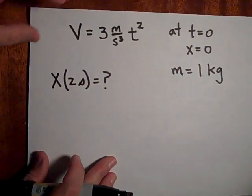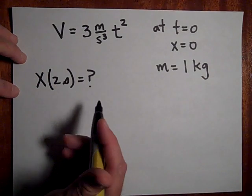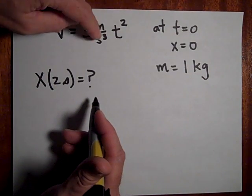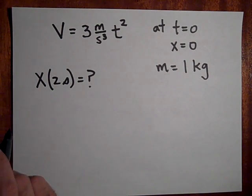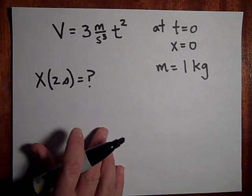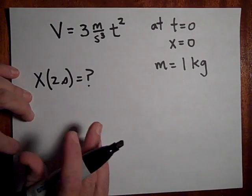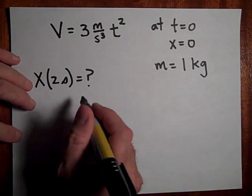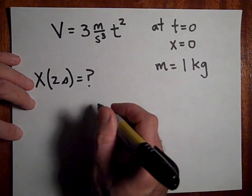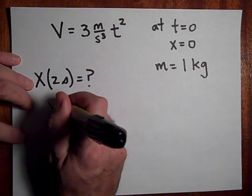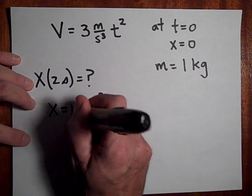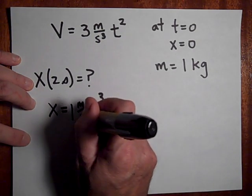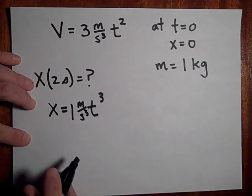Okay next one. Hey, if I gave you a function of V is equal to 3 meters per second cubed T squared, and I asked you for the position at 2 seconds, would you be able to get that? Go ahead and try. Okay, nothing to do with work here, but it's a little bit of calculus. You have to take the anti-derivative of this. So let's see, the anti-derivative X is equal to T cubed, and the units stay the same. You just, the unit shouldn't be a problem, you just leave those alone.